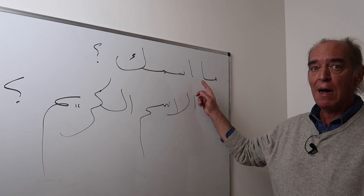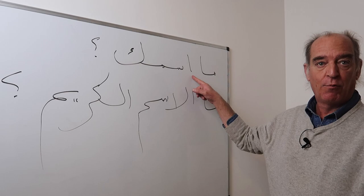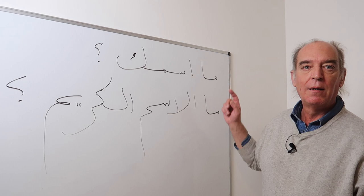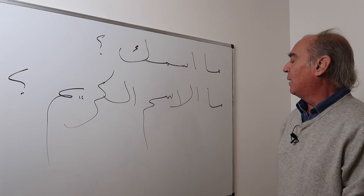There are two expressions. The most frequent is 'Ma ismuka' — or 'ismuki' if speaking to a woman. Remember that the alif of 'ism' is alif wasla, so you should say 'Ma smuka' or 'Ma smuki' with the wasla. Many people say 'Ma ismuka' with a hamza, but for good language that is considered wrong.